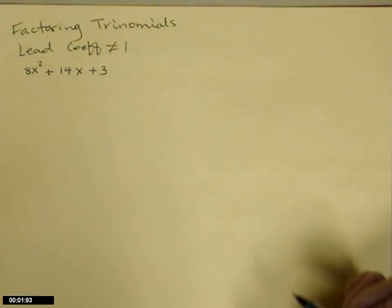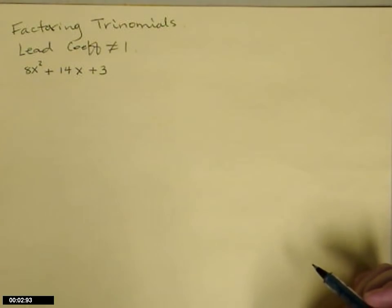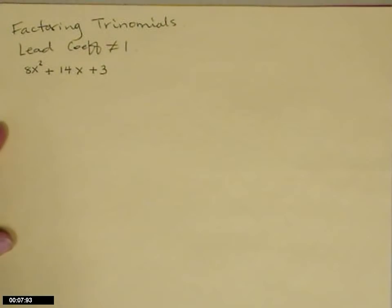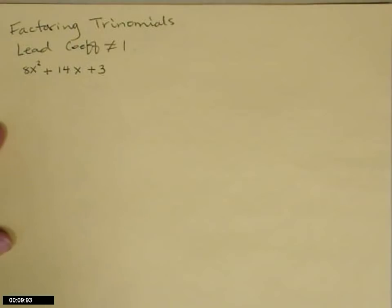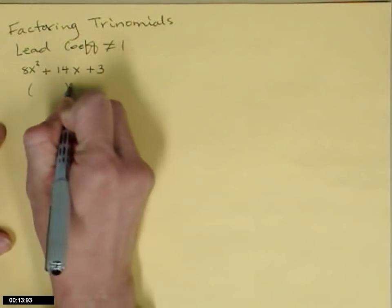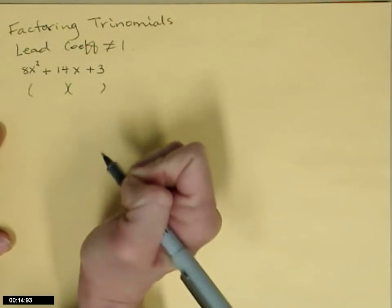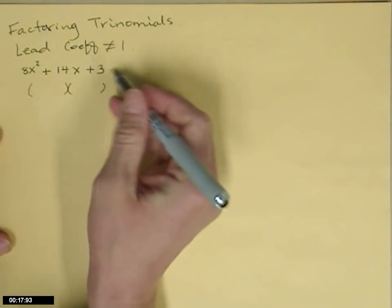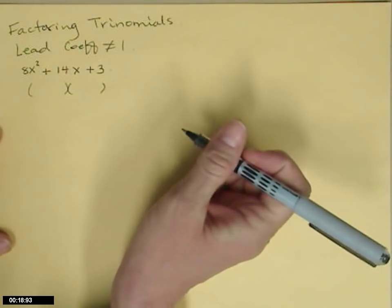Some of the trickiest trinomials to factor are the ones where the leading coefficient isn't 1. Here's an example: 8x squared plus 14x plus 3. Our goal is to get to the place where we have two sets of parentheses such that if we multiply them, we would get back to the original expression.